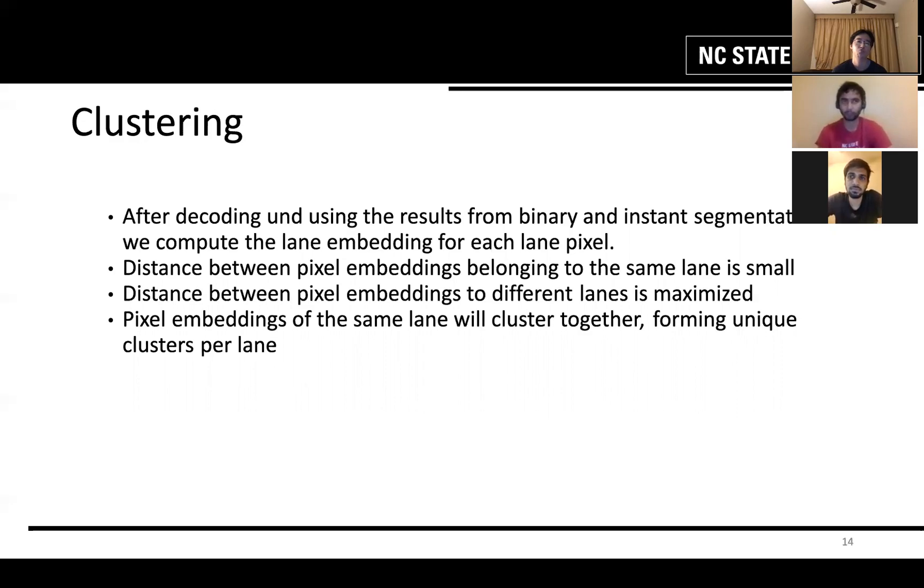So if there are two pixels that belong to different lanes, their distance should be maximized. So we are going to have two different clusters for two different pixels that are belonging to two different lanes and two pixels belonging to same lane will lie in a single cluster. Pixel embeddings of the same lane will cluster together forming a unique cluster per lane.